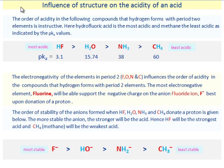The order of acidity in the following compounds that hydrogen forms with period 2 elements is instructive. Here hydrofluoric acid is the most acidic and methane the least acidic as indicated by the pKa values.